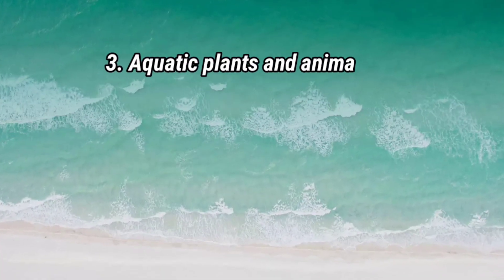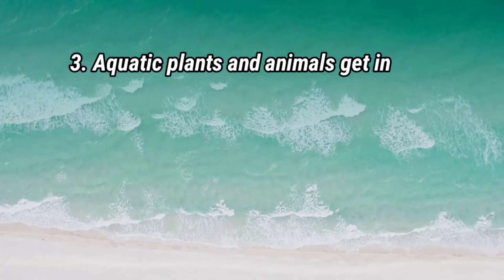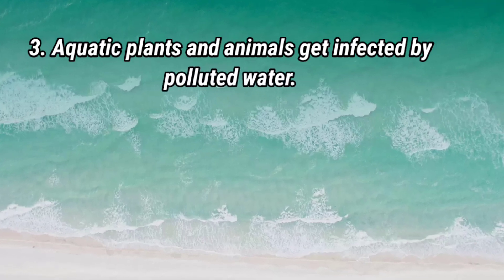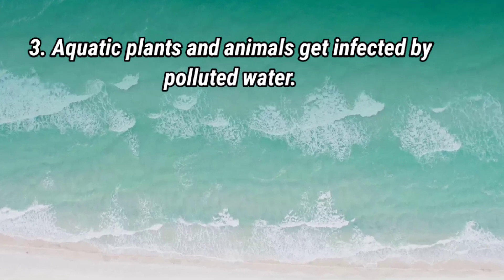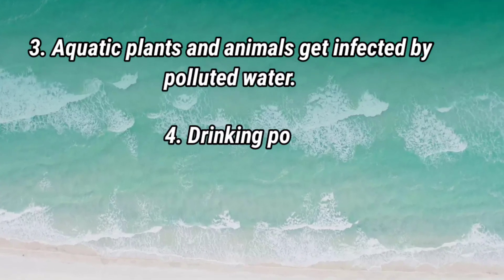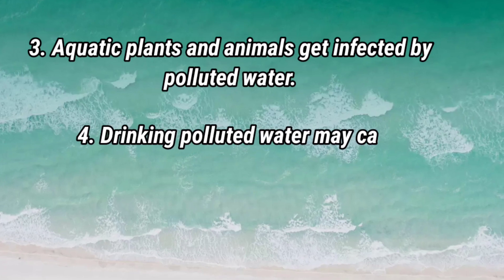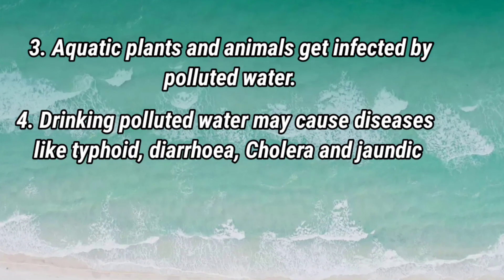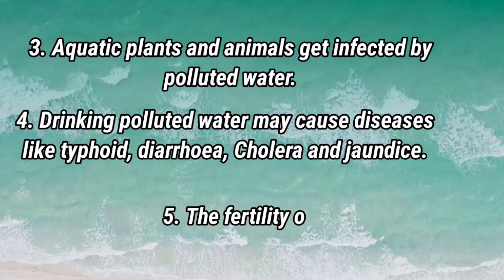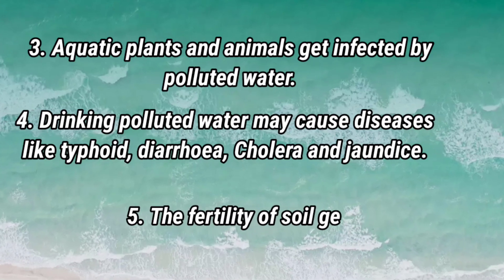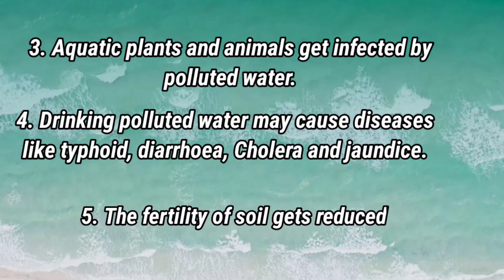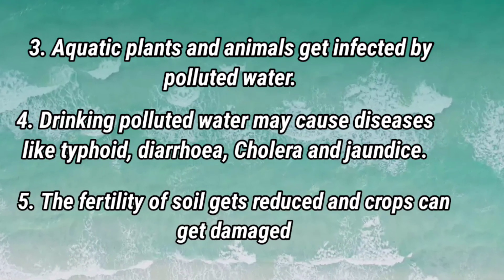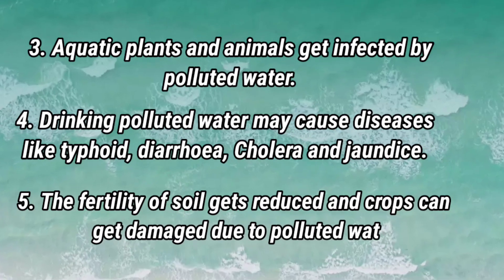Aquatic plants and animals get infected by polluted water. Drinking polluted water may cause diseases like typhoid, diarrhea, cholera, and jaundice. The fertility of soil gets reduced and crops can get damaged due to polluted water.